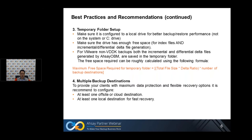For VMware backups running non-incremental backups, both incremental and differential delta files are generated by OBM and saved in the temporary folder. The free space required can be roughly calculated using the formula: free space required equals total file size of the guest VM times the delta ratio. The default delta ratio is 50%, times the number of backup destinations.